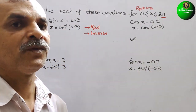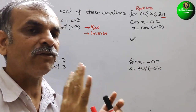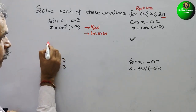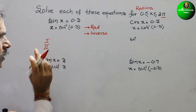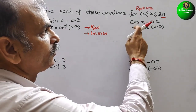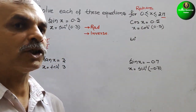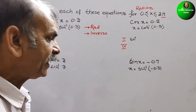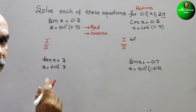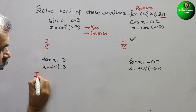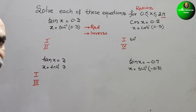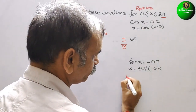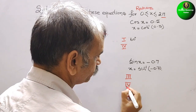Now we determine which quadrants each falls in — positive as well as negative. Sine is positive in the first and second quadrant. Cosine is positive in the first and fourth quadrant. Tan is positive in the first and third quadrant. Sine is negative in the third and fourth quadrant.